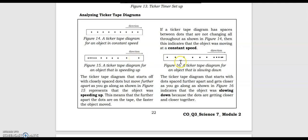When slowing down, it is the reverse. At the beginning, the dots are farther apart from each other, and later on they are spaced closely together — the object is slowing down. So, see the difference between speeding up and slowing down.